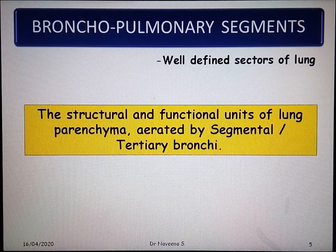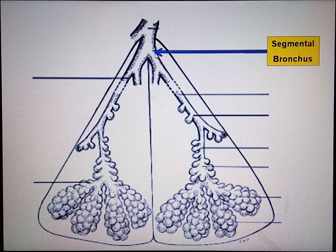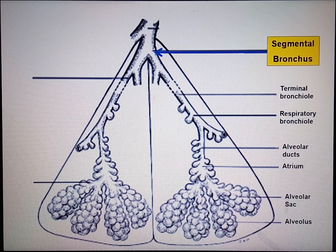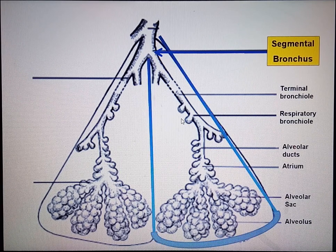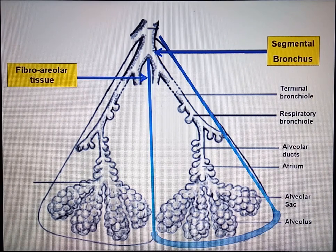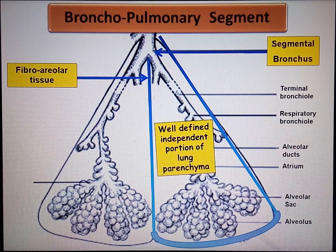Let's understand this diagrammatically. Here is one segmental bronchus which is derived from a lobar bronchus. After successive orders of divisions, each segmental bronchus gives rise to terminal bronchioles, respiratory bronchioles, alveolar ducts, atria, alveolar sacs and alveoli. Such a portion of bronchial tree formed from a single segmental bronchus, enclosed within a tough fibroareolar tissue, forms a well-defined independent portion of lung parenchyma called bronchopulmonary segments.